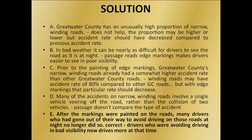Option A says Great Water County has an unusually high proportion of narrow winding roads. This does not help. The proportion may be higher or lower but the accident rate should have decreased compared to the previous accident rate. So option A is ruled out.